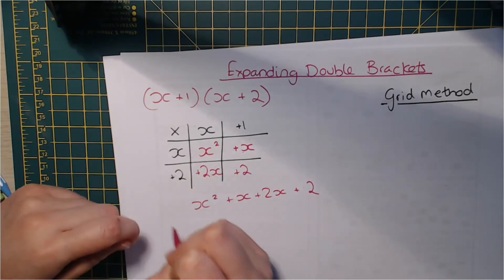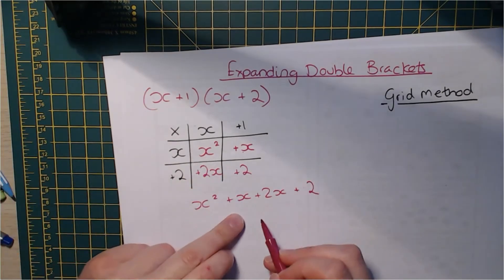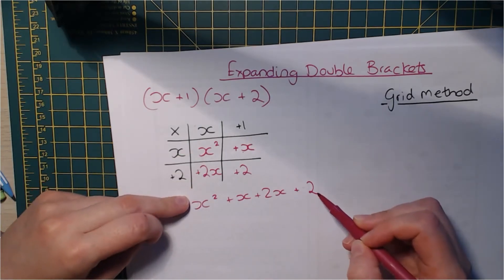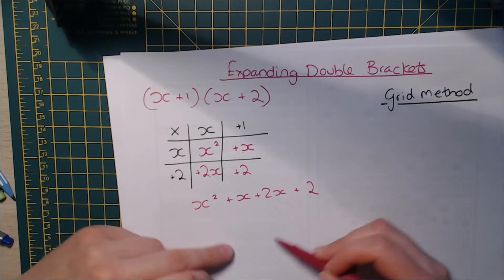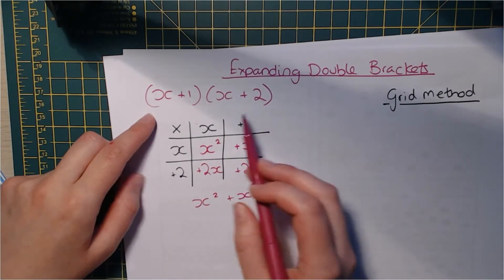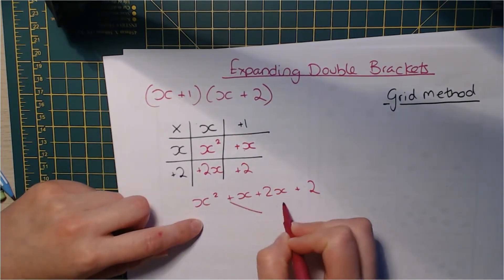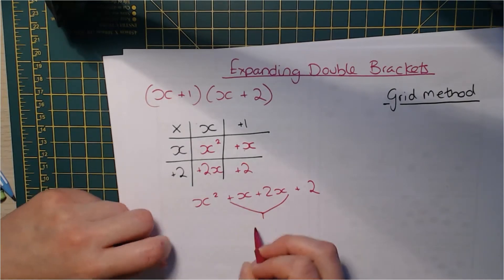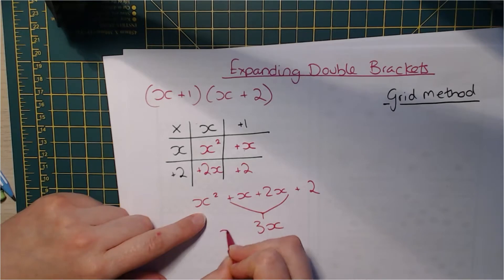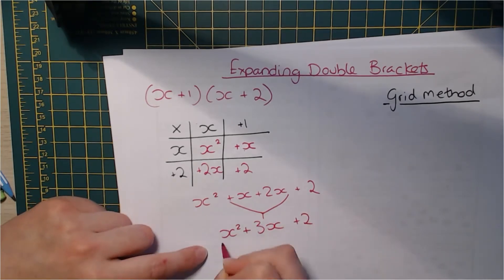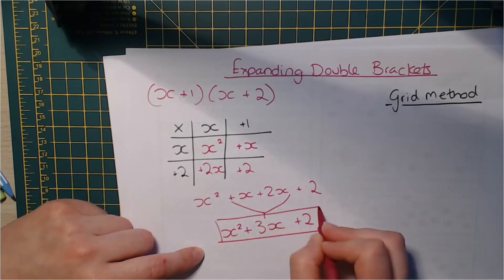So x squared plus x plus 2x plus 2. And I'm not going to spend ages showing you how to simplify this because we did it on the last video. Once we get to this point, the methods are exactly the same from there on. The simplification works the same, it's just this part. So yeah, these two go together. We get x plus 2x gives us 3x and then we get x squared plus 3x and then plus 2 comes down. So there's your first answer.